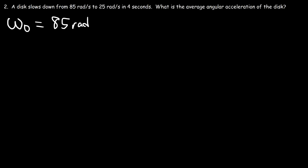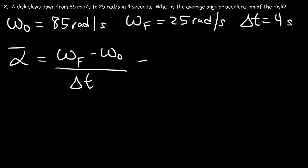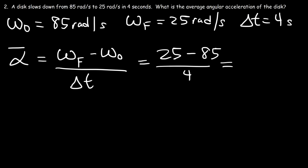Number 2: A disk slows down from 85 radians per second to 25 radians per second in 4 seconds. What is the average angular acceleration of the disk? Using the same formula — change in angular velocity divided by change in time — that's 25 minus 85 divided by 4. 25 minus 85 is negative 60, and dividing by 4 gives us negative 15 radians per second squared.